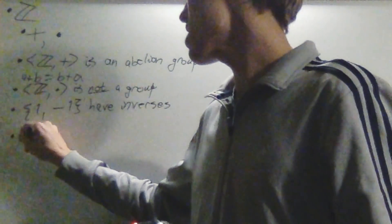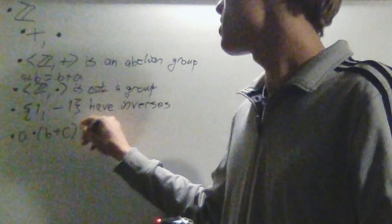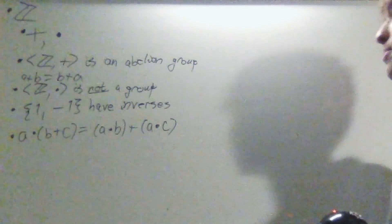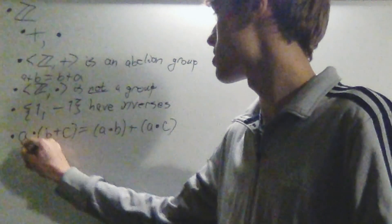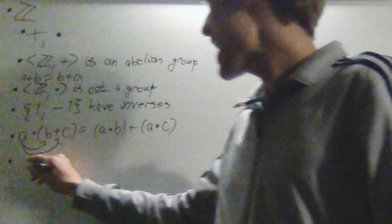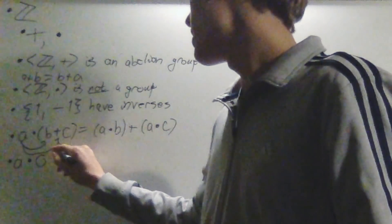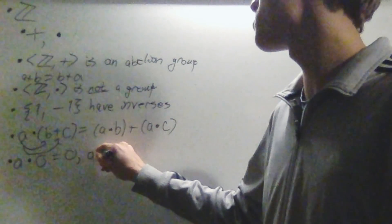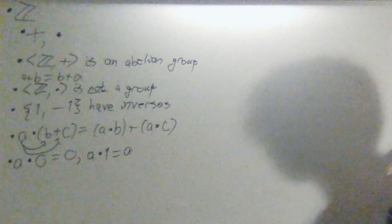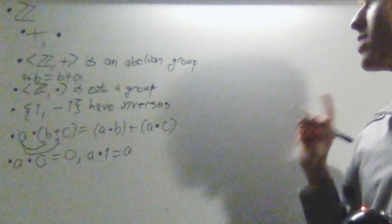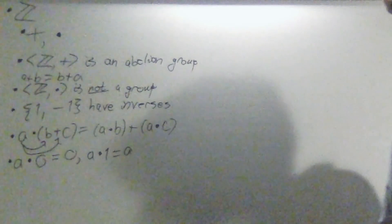A property that you've probably already thought of that I haven't mentioned yet is that a times b plus c equals a times b plus a times c. It's just the distributive property. And another property is that a times 0 is equal to 0 for every single a. And then another multiplication property is that a times 1 equals a for all a. Because Z under multiplication is not a group, we do not automatically have that it has an identity, so I think it's useful to point that out.